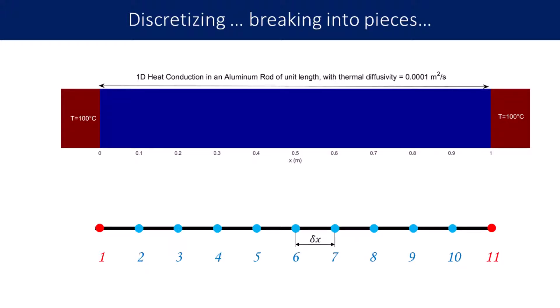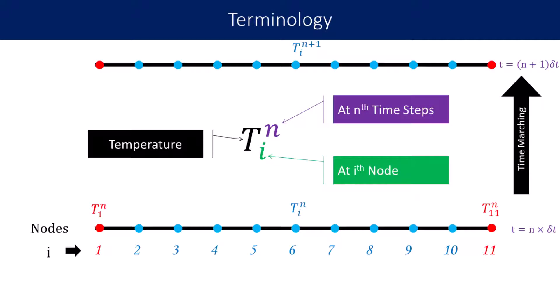Let's name these nodes with numbers, counting from left to right: first node, second node, third node, and so on till the 11th node. We are going to apply the 1D heat equation at each of these 11 specific points and see how the temperature varies as time progresses. The very first time instant when the rod just came in contact with the heat blocks is T equal to zero. We compute the temperature at every time step of delta T as we progress in time.